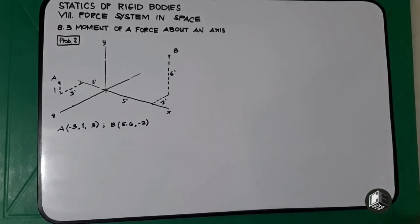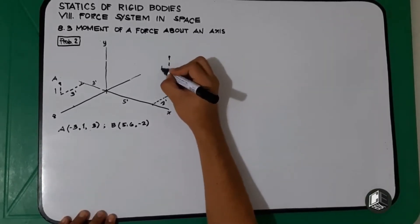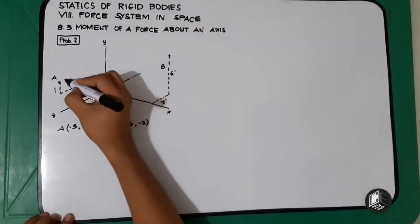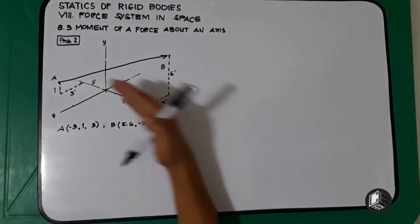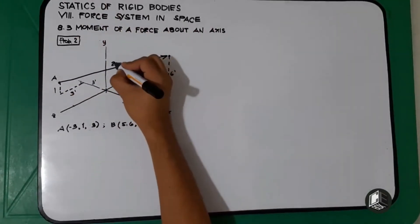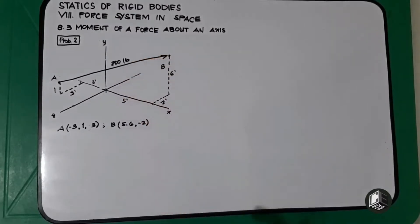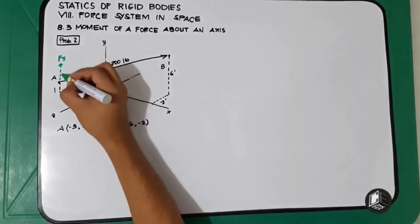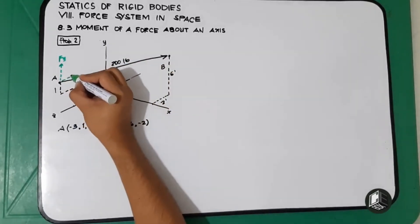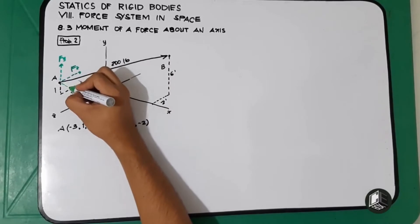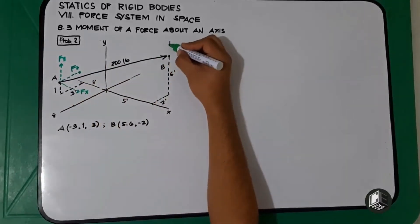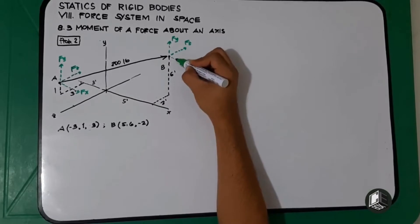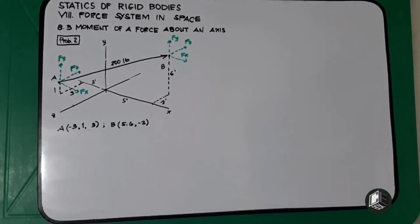The force is pointed backward upward to the right — from point A to point B. This is our 200-pound force. Now let's convert it into components. Fy is upward, Fz is backward, and Fx is to the right.